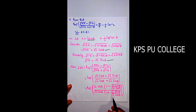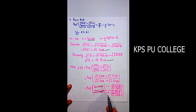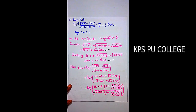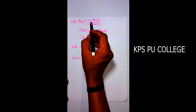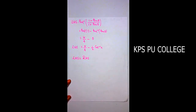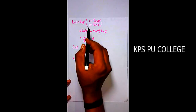After √2 cancels from numerator and denominator, LHS becomes tan⁻¹[(1 - sinθ/cosθ) / (1 + sinθ/cosθ)] = tan⁻¹[(1 - tanθ) / (1 + tanθ)].